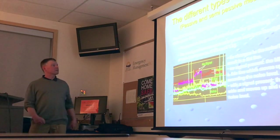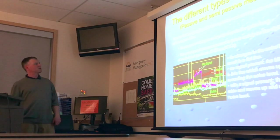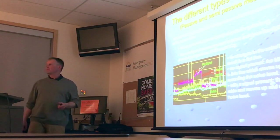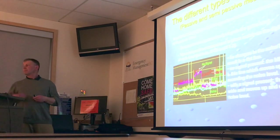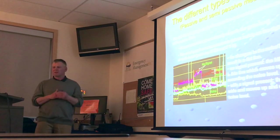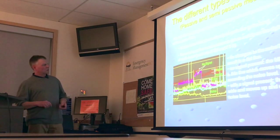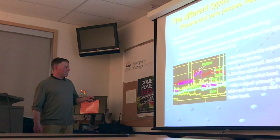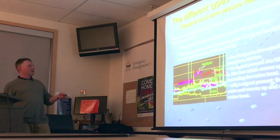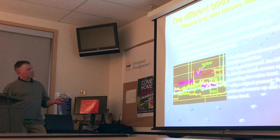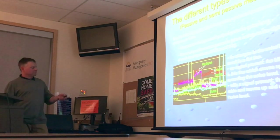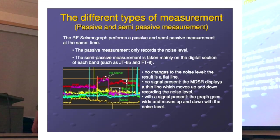The RF seismograph performs both passive and semi-passive measurement simultaneously. It measures the background noise and also the noise level. Whenever a signal goes on top of the noise level, you get a widening of the trace. You can see the noise level changes at the bottom and then the signal on top.